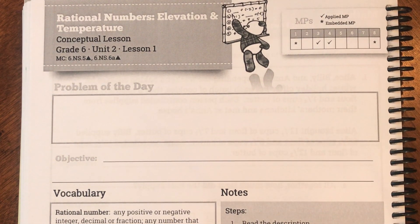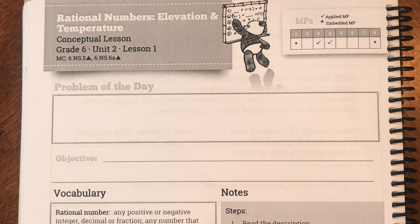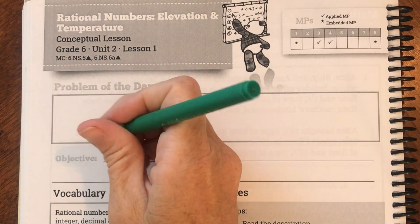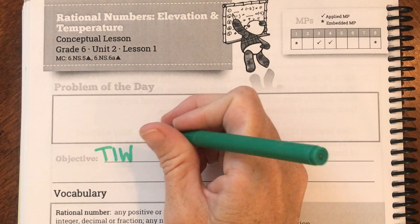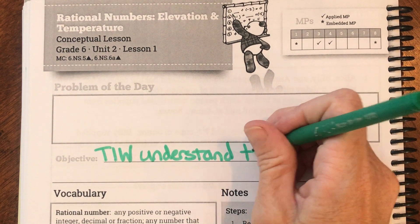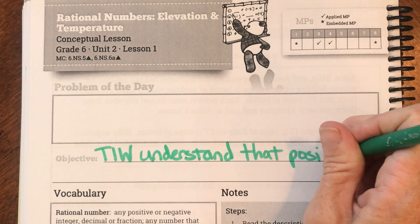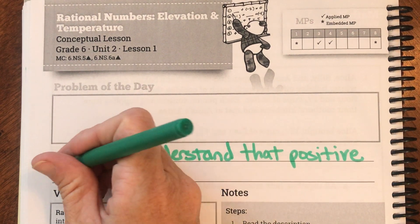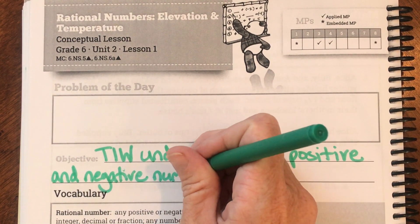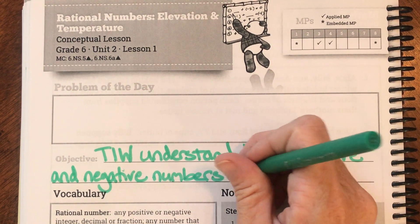Good morning ladies and gentlemen. Today we are on page 131 of your student journal and we are actually going to be doing unit 2, lesson 1, lesson 2, and lesson 3 all together. Our goal today is that I will understand that positive and negative numbers are used together.